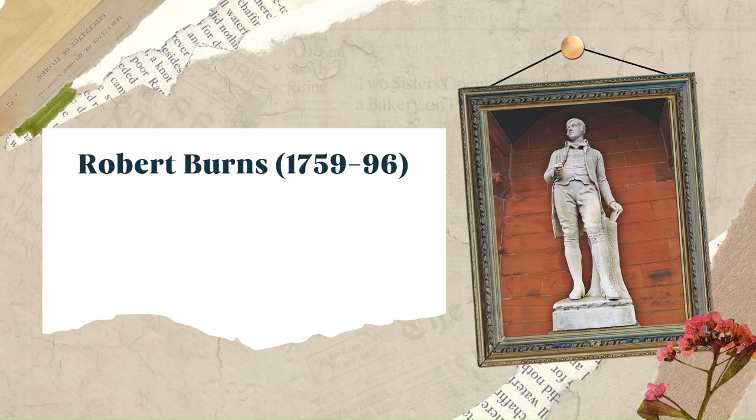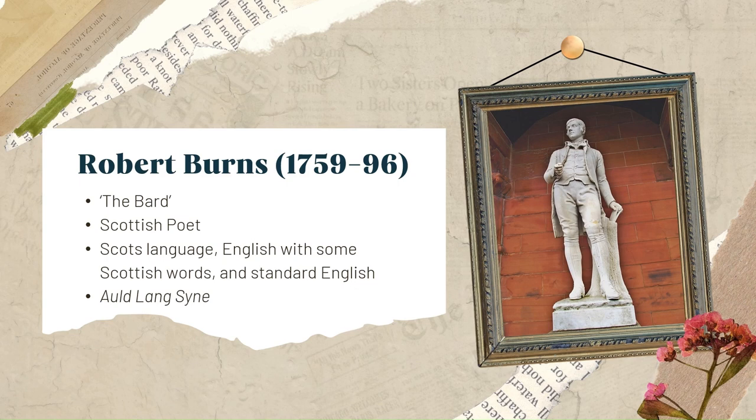Robert Burns (1759–96). Known in Scotland as the Bard, Robert Burns was a Scottish poet. He wrote in the Scots language, English with some Scottish words, and Standard English. He also revised a lot of traditional folk songs by changing or adding lyrics. Burns' best-known work is probably the song Auld Lang Syne, which is sung by people in the UK and other countries when they are celebrating the New Year, or Hogmanay as it is called in Scotland.